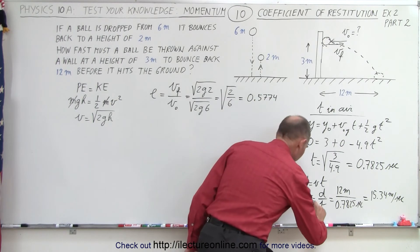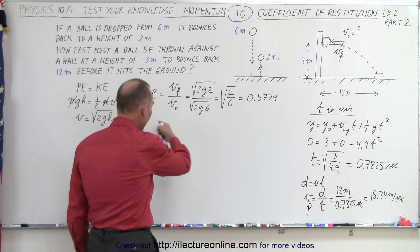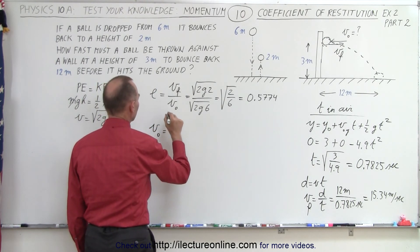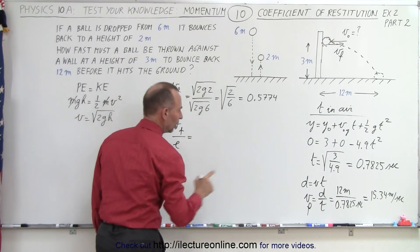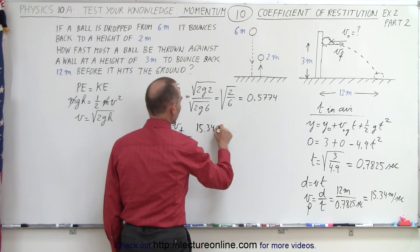All right. So that's the final velocity required. So what should the initial velocity be? For that, we go back to the coefficient of restitution. Here we can say that the initial velocity is equal to the final velocity divided by the coefficient of restitution. The final velocity is 15.34 meters per second.